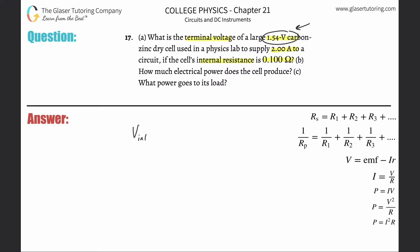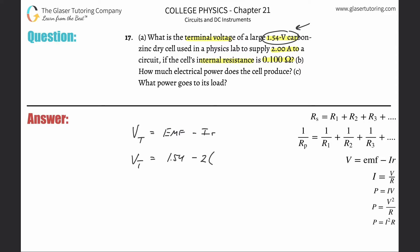This would be the internal voltage drop. The formula is: the terminal voltage V_t equals the battery EMF — the theoretical max — minus the current multiplied by the internal resistance r. So the total is 1.54 minus (2 amps × 0.1 ohms), which gives 1.54 minus 0.2, and the terminal voltage is 1.34 volts.